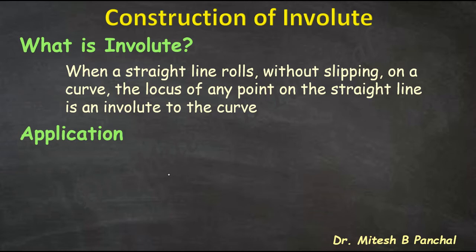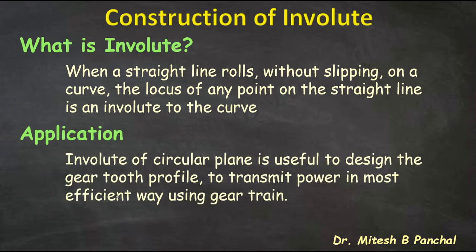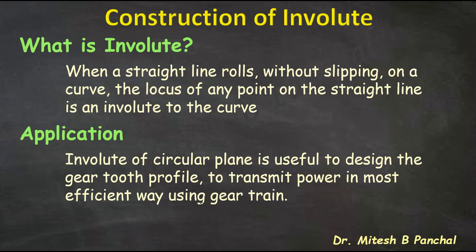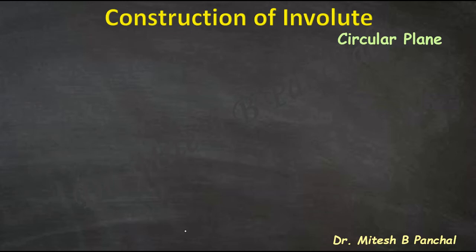The application of an involute for a circular curve is useful to design the gear tooth profile for efficient power transmission using a gear train. Gearboxes are used to transmit power from one shaft to another shaft. To transmit power using a gearbox in the most efficient way, the gear tooth profile — that is, the shape of the gear tooth curvature — is important, and in most cases, the involute curvature for the circular plane is used. In this session, we will go through the construction procedure of an involute for a circular plane.